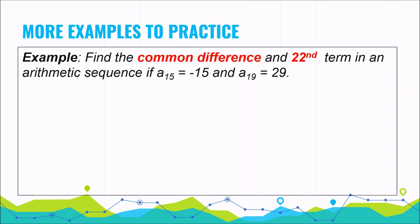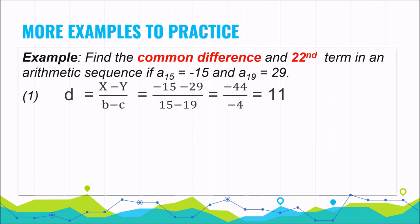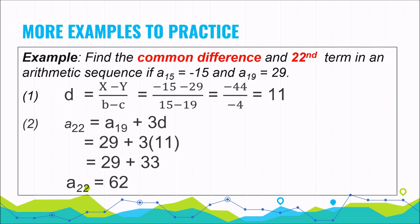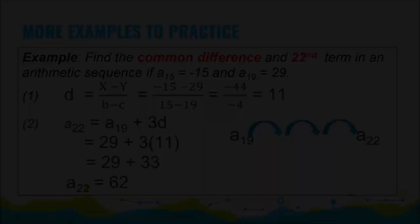The common difference is 11 and the 22nd term is 62. Notice that a sub 19 is three steps forward to the 22nd term. You need to take three steps from a sub 19 to arrive at the 22nd term, meaning you multiply the common difference by 3. So a sub 22 equals 62. Just get that trick and it will minimize your solution.